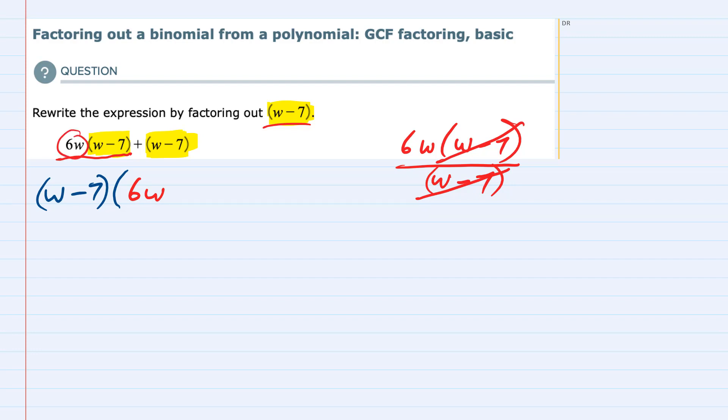Again, I have factored out the (w - 7), and then in the second term, I have plus a (w - 7). Well, what happens if I factor out the (w - 7)?